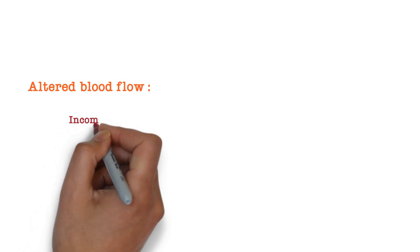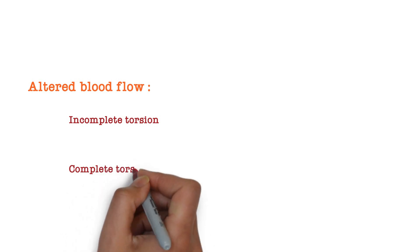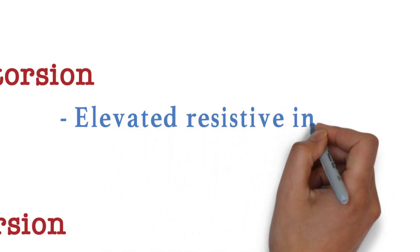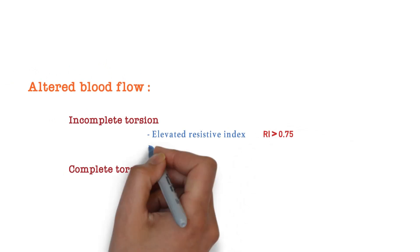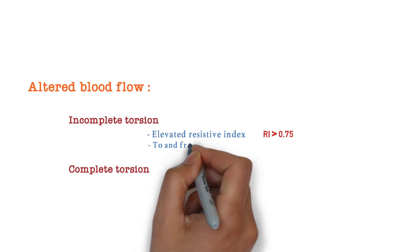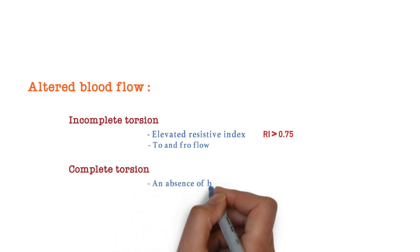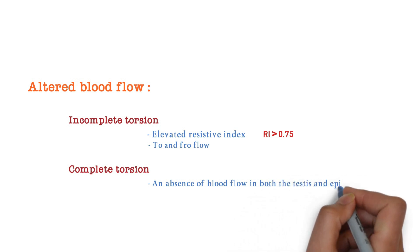Based on altered blood flow, testicular torsion can be differentiated into incomplete or complete torsion. In incomplete torsion, the resistive index is elevated more than 0.75 in the testicular artery, and there is to-and-fro flow of blood. In complete torsion, there is complete absence of blood flow in the testis.